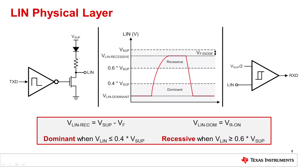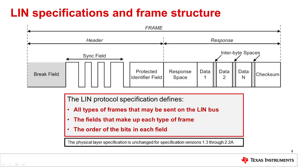The LIN physical layer signals either recessive or dominant. To indicate dominant, the LIN pin voltage must be less than or equal to 0.4 of the system supply voltage. It is recessive when the LIN pin voltage is greater than or equal to 0.6 of the system supply voltage. The LIN protocol specification defines all types of frames that may be sent on the LIN bus, the fields that make up each type of frame, and the order of the bits in each field. The physical layer is unchanged for LIN specification versions 1.3 through 2.2a.